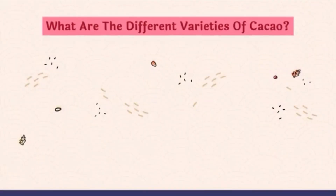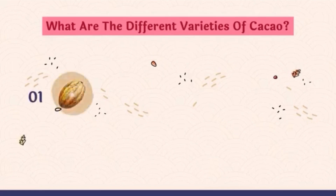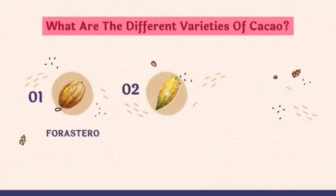Next, what are the different varieties of cacao? The three varieties are: first, Forastero; second, Criollo; and third, Trinitario.